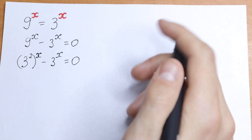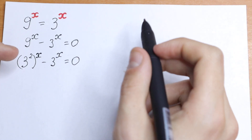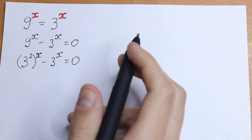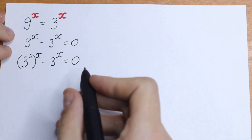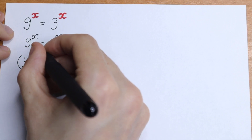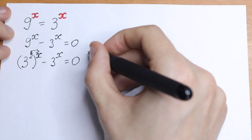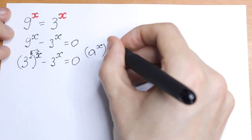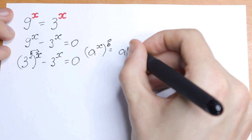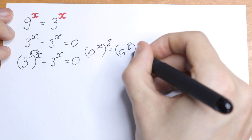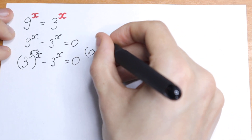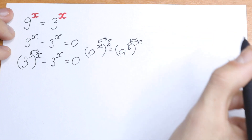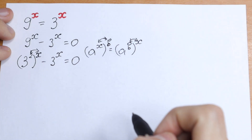What are we going to do next? We just wrote 9 as 3 squared, but we still don't have the same bases. I want to suggest a really useful rule — the rule of interchange — so we can swap the exponents, these powers. If you have a to the power x, raised to the power b, we can write it as a to the power b, raised to the power x. So we can easily swap these powers — it doesn't matter.